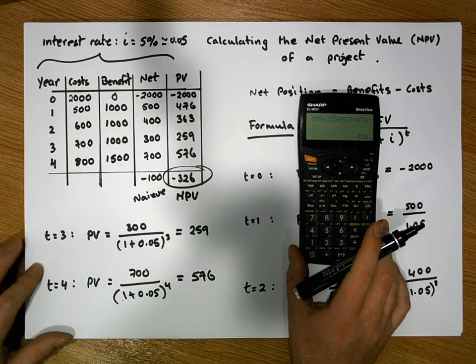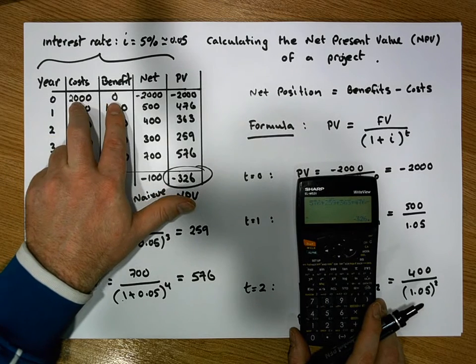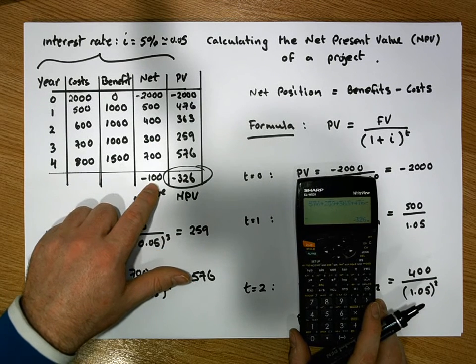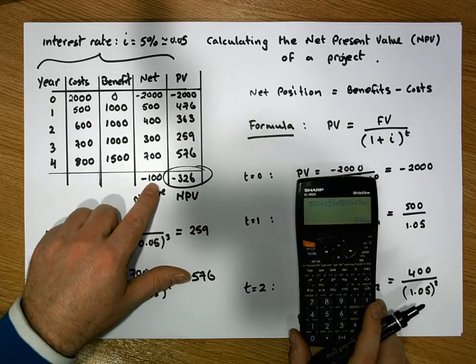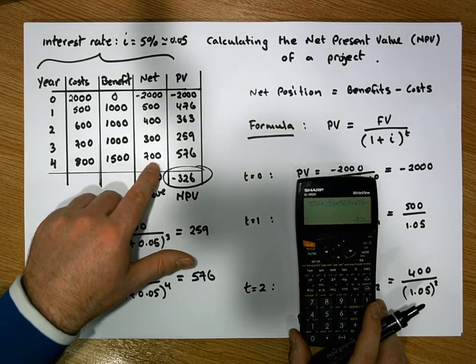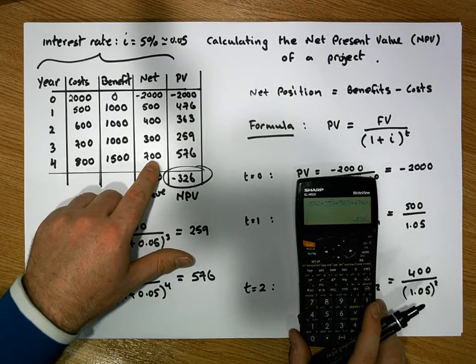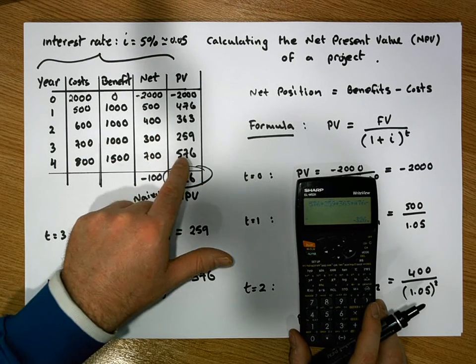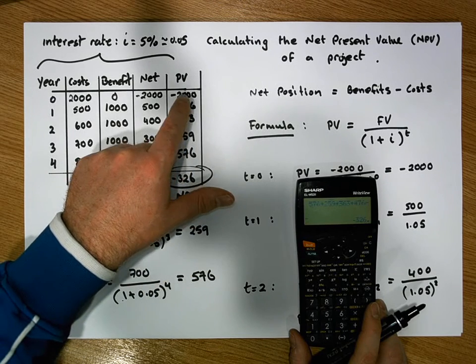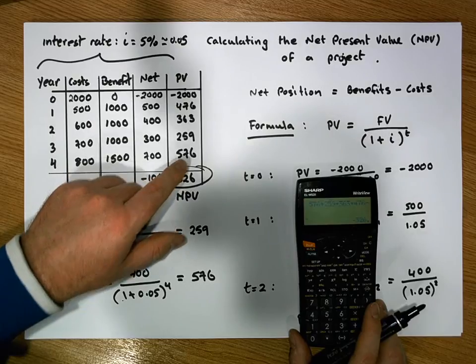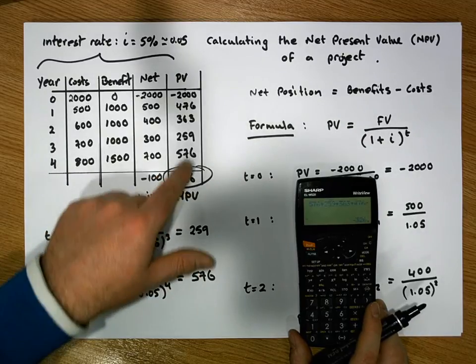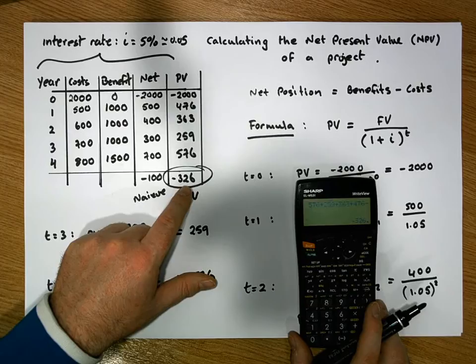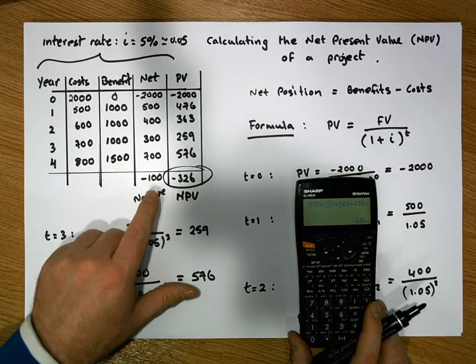So let's just recap here. From a naive perspective, getting the difference between the benefits and the costs for each year and summing up them net positions, we would expect to make a loss of 100 euros. But the problem with this particular technique is that we don't take into consideration the time value of money, that some amount of money in the future is not worth the same today due to prevailing interest rates. Now, when we calculate the present value for each net position, that brings each value or each amount in the future back into today's terms. So when we sum these values up, we get a value that represents the totality of how much this project is worth in today's terms. In this case, this project would make a loss of minus 326 euros, which is a bigger loss in today's terms than what the naive approach would have said.